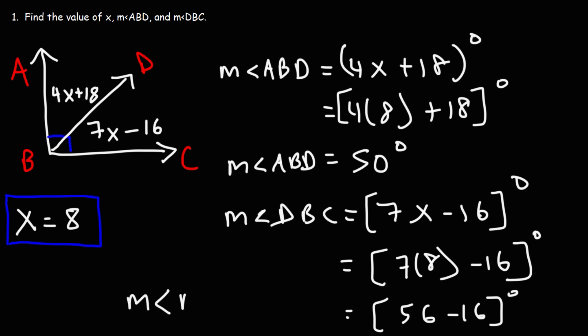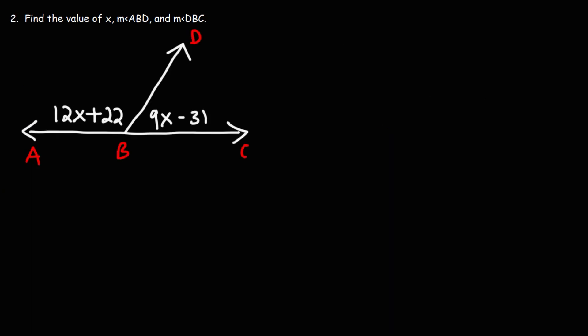56 minus 16 is 40. So angle DBC has a measure of 40 degrees. And as we can see, these two angles are complementary. They add up to 90. 50 plus 40 is 90. Now let's move on to our second example problem.